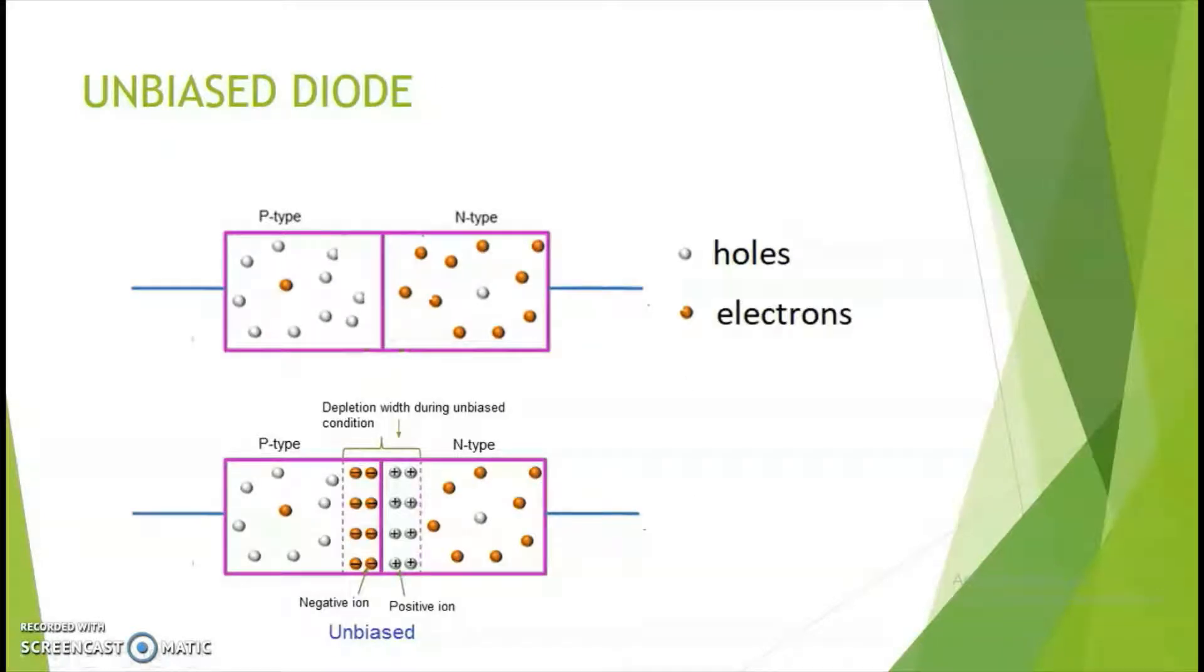Next, we will study about biasing of diodes. Biasing means to connect a battery or power source to the diode.